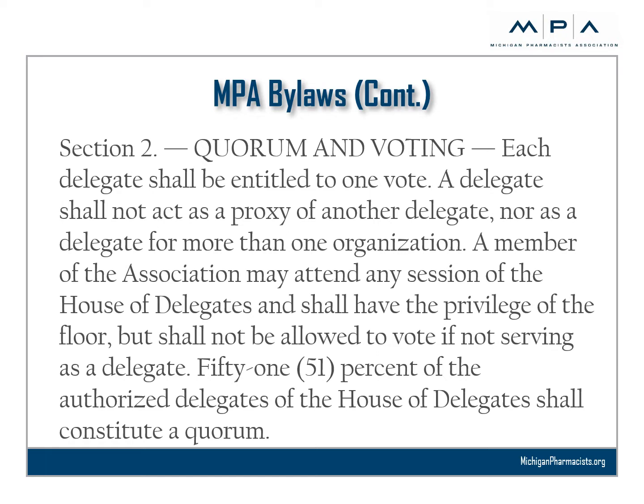Section 2, Forum and Voting: each delegate shall be entitled to one vote. A delegate shall not act as a proxy of another delegate, nor as a delegate for more than one organization. A member of the Association may attend any session of the House of Delegates and shall have the privilege of the floor, but shall not be allowed to vote if not serving as a delegate. Even if you don't have the opportunity to serve as a delegate, it's encouraged that all MPA members at some point attend a House session to get a true appreciation of the House and its processes.